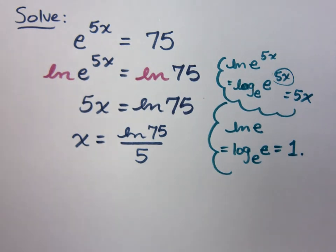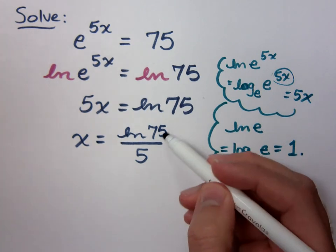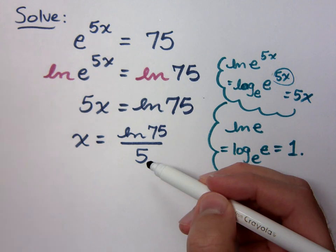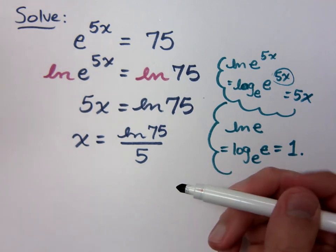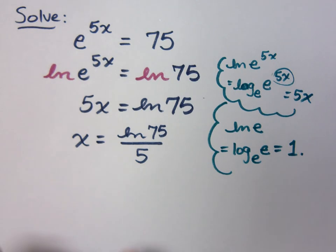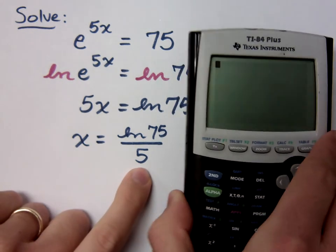Now, that's the exact answer. Can I do 75 divided by 5 in this problem? Can I do that? No. You better not. What you can do, though, is just type this into your calculator. This is exact.